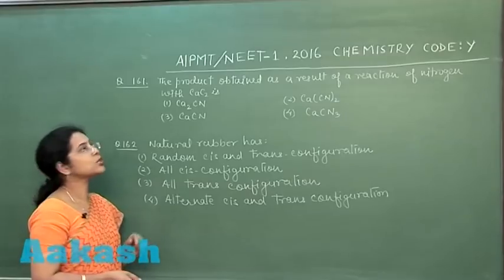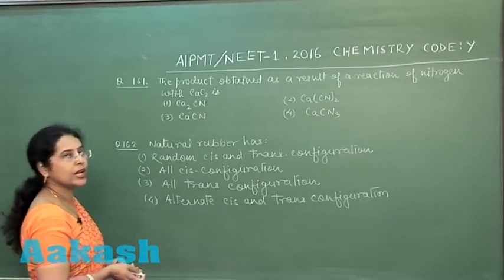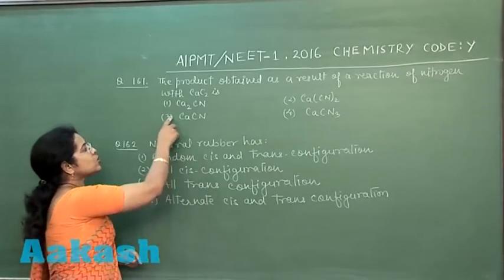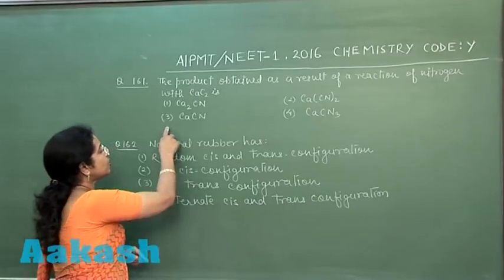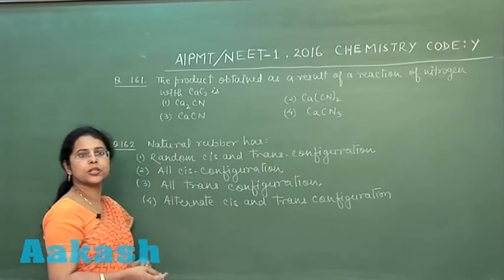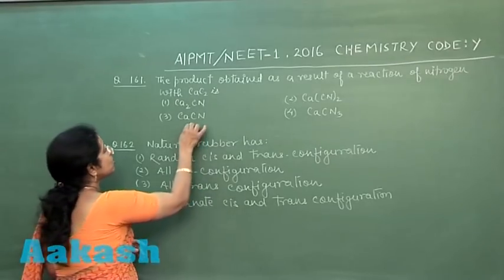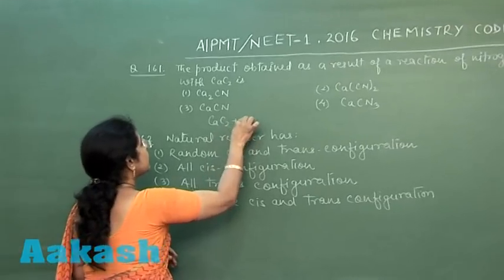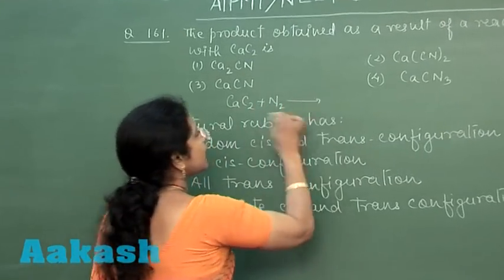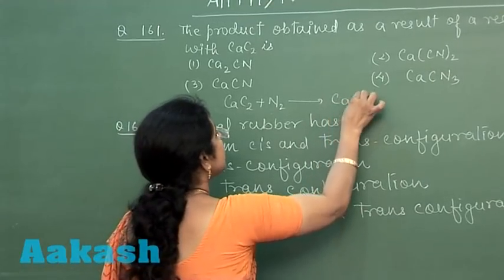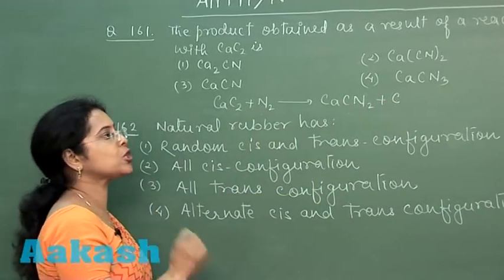The next question asks about the product obtained from the reaction of nitrogen with calcium carbide. The options are Ca₂CN, Ca₂(CN)₂, Ca₄CN, and Ca₄(CN)₂. When calcium carbide reacts with nitrogen, it forms Ca₂CN₂ (calcium cyanamide) plus carbon.